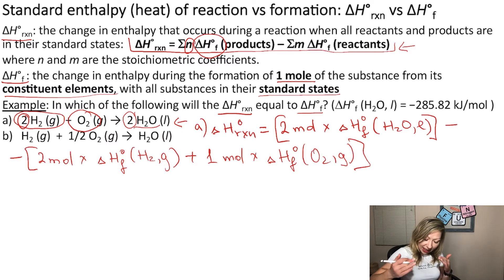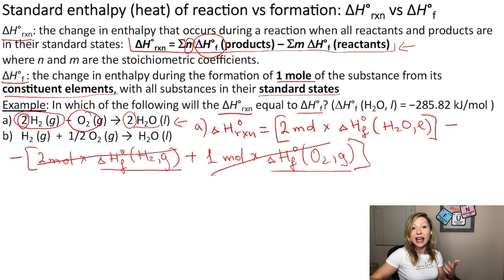Now let's analyze this formula. What is the heat of formation of hydrogen gas? Well, it is actually in its most stable state, so the heat of formation of H2 gas is going to equal zero. So this whole part will cancel out. How about oxygen gas? O2 gas is going to have a heat of formation equal to zero. So this whole part again cancels out.